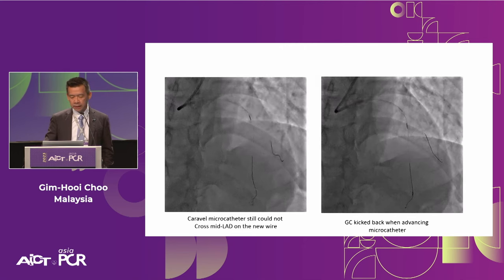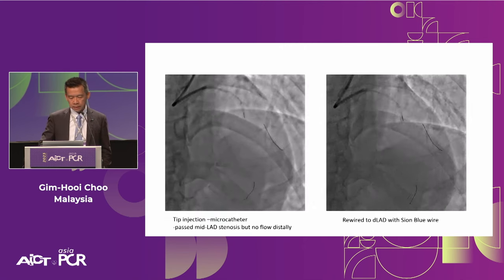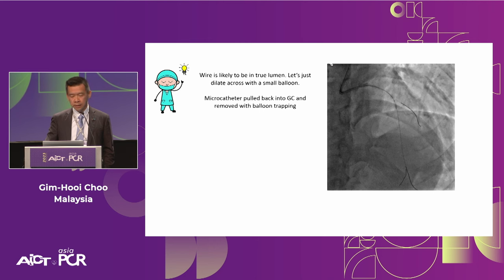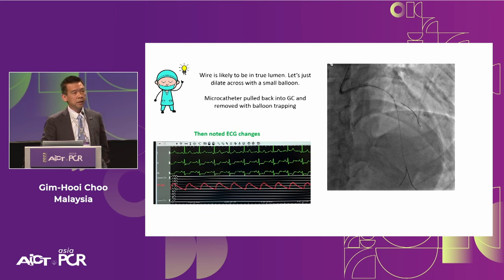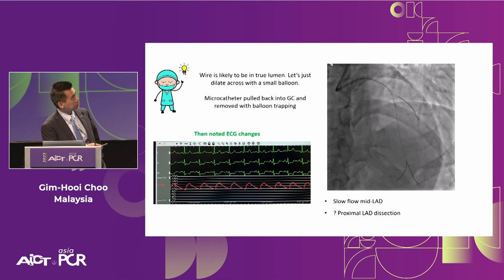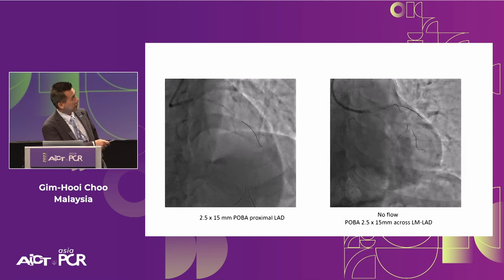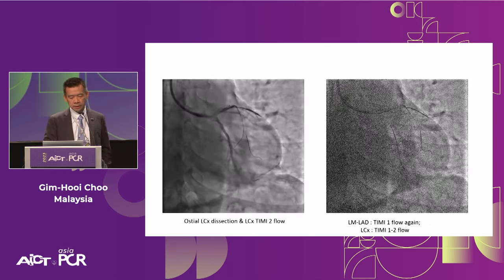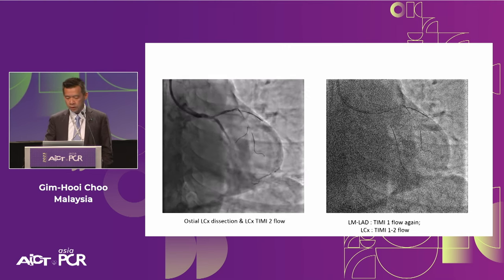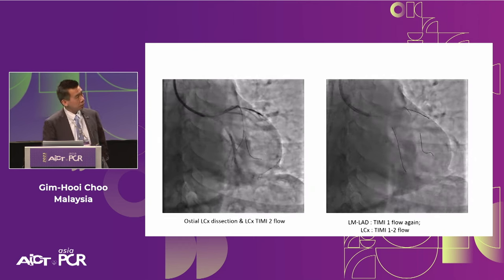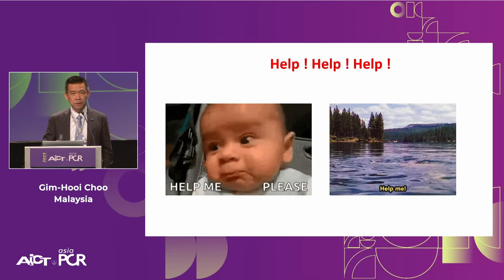We thought maybe just balloon and see whether we can get some flow. We pulled back the microcatheter, which was deeply engaged in the lesion, and there was something on the EKG. Blood pressure started to come down. We took a shot — something was not happening at the ostial LAD. Quickly brought in the balloon and dilated across. There was a dissection down the left main, LAD, and also involving the ostial left circumflex — now the target became different. Slow flow, TIMI 1, to both vessels. That sinking feeling set in.